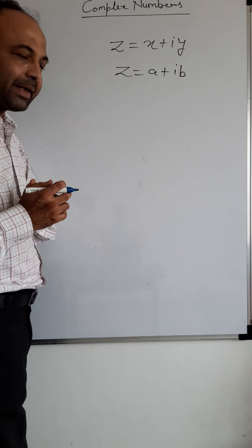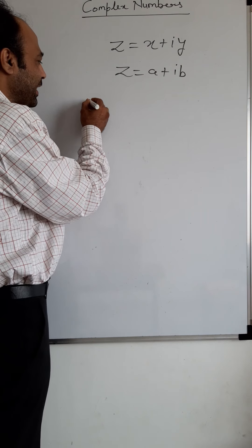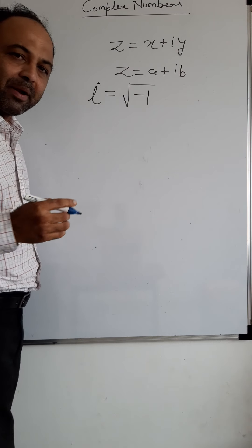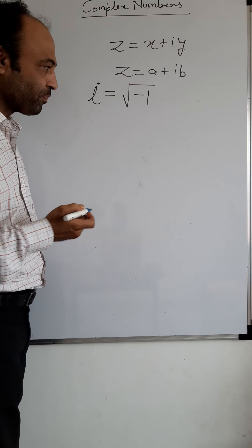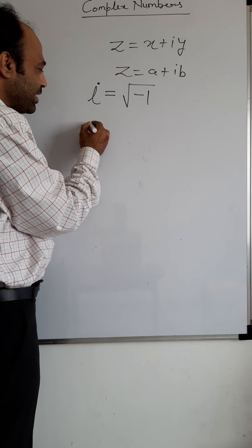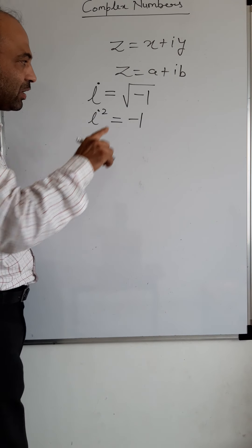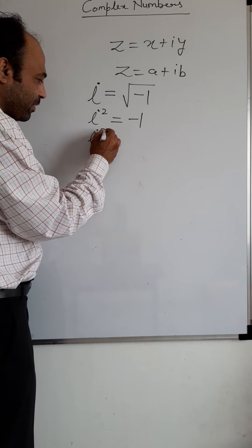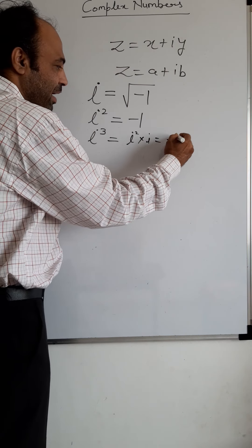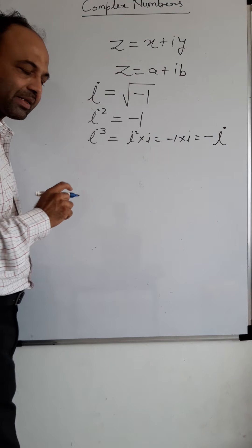In this video we will discuss the values of i that we need to use in problems. As all of you know, i equals root under minus 1. If I square it, we get minus 1 — the roots cancel. If I cube it, I write it as i² into i, which is minus 1 into i, giving minus i. So i³ is minus i.